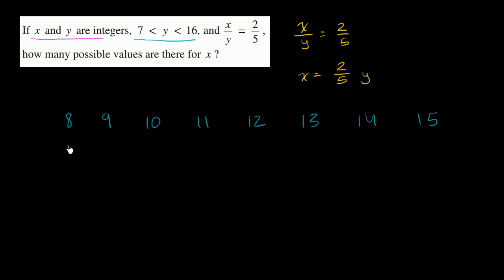Now, if x is equal to 2 fifths y, so over here you would have 8 times 2 fifths. So let me write this down. So these are our possible y's, and then our possible x's, 8 times 2 fifths. Now, is this thing right over here going to be an integer? Remember, x and y need to be integers. Well, no. 8 isn't divisible by 5. 8 times 2 is 16. 16 isn't divisible by 5. And so this is not going to be an integer.